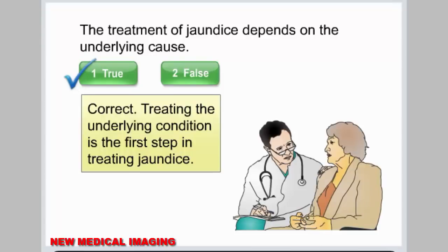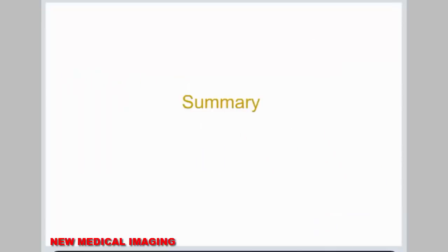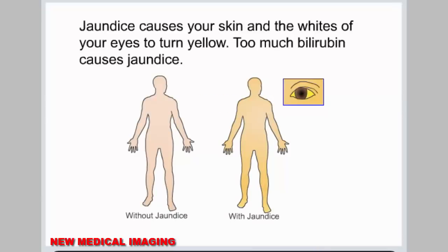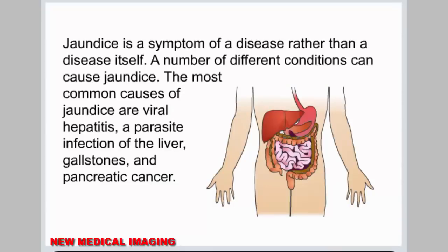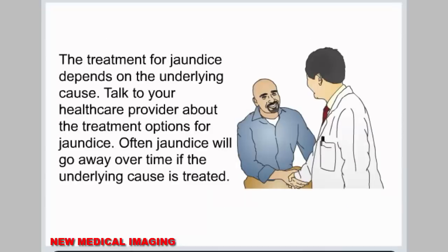Summary. Treating the underlying condition is the first step in treating jaundice. Jaundice causes your skin and the whites of your eyes to turn yellow. Too much bilirubin causes jaundice. Jaundice is a symptom of a disease rather than a disease itself, and a number of different conditions can cause it. The most common causes are viral hepatitis, a parasite infection of the liver, gallstones, and pancreatic cancer. The treatment for jaundice depends on the underlying cause. Talk to your healthcare provider about the treatment options for jaundice. Often, jaundice will go away over time if the underlying cause is treated.